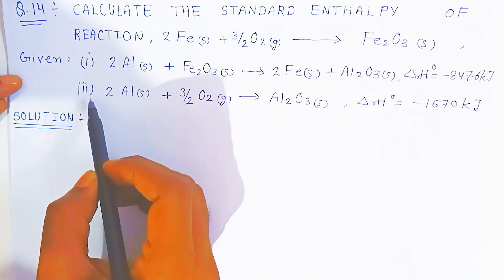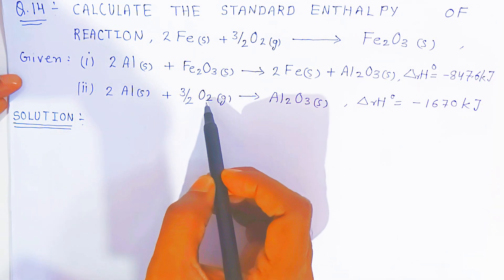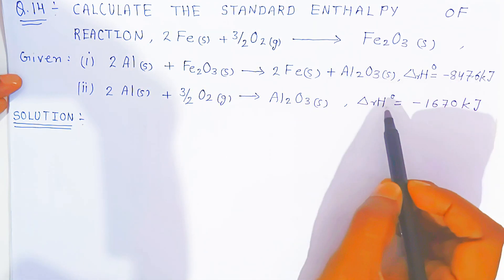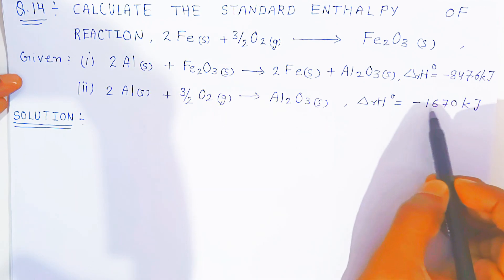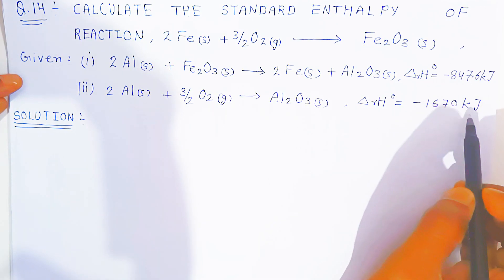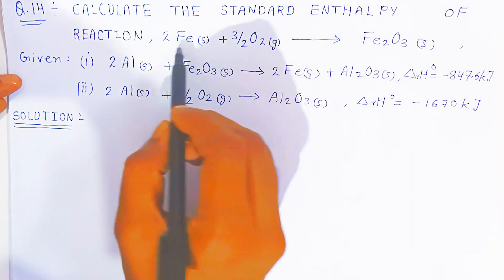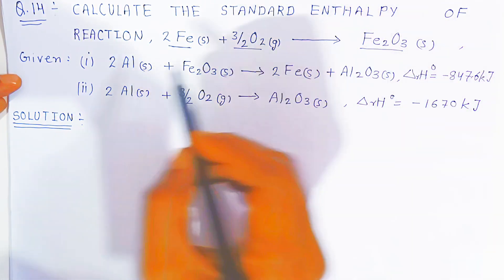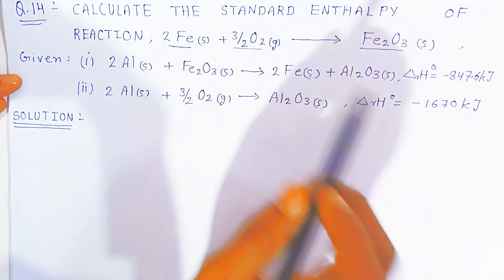Now in the second reaction, aluminium solid is oxidizing with oxygen and giving aluminium oxide. The standard enthalpy of that reaction is given as minus 1670 kilojoules. Now, if you want to calculate the standard enthalpy of the main reaction where iron reacts with oxygen and forms iron oxide, with the help of these given reactions, you have to calculate the standard enthalpy.